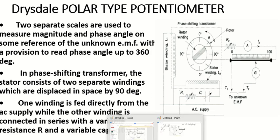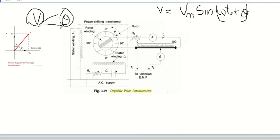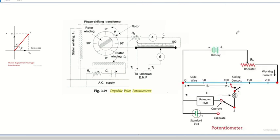Recall the DC potentiometer: in DC potentiometer, how do you supply current to the slide wire? Using a battery — the battery provides constant current to the slide wire. Here, instead of that battery, we are using this rotor winding arrangement. So the purpose of the rotor winding is to provide constant current to the slide wire. The rotor winding gets its current because when AC supply is given to the stator winding, an EMF is induced in the rotor winding, and that current is given to the slide wire.